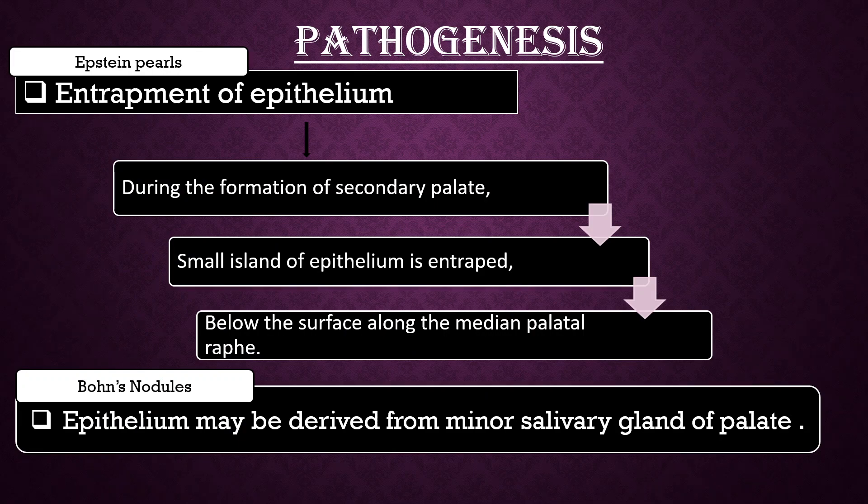Pathogenesis of Epstein pearls. Entrapment of epithelium. During the formation of the secondary palate, a small island of epithelium is entrapped below the surface along the median palatal raphe. This is how Epstein pearls are formed.